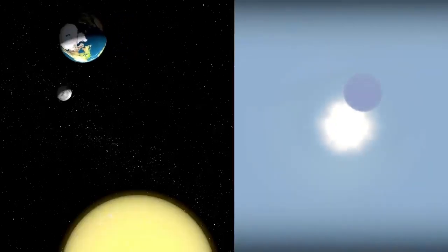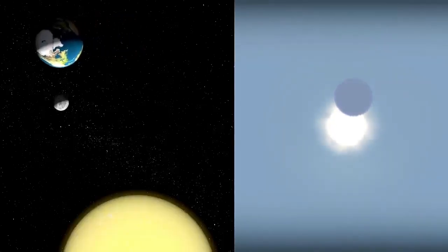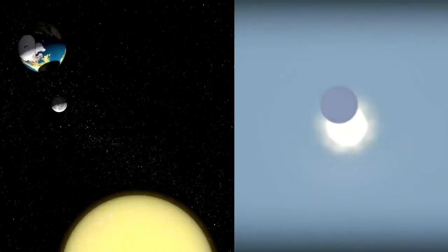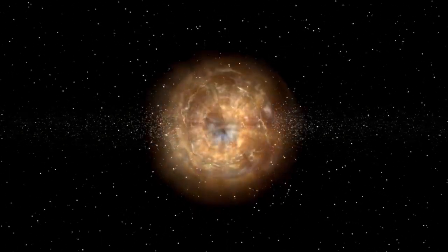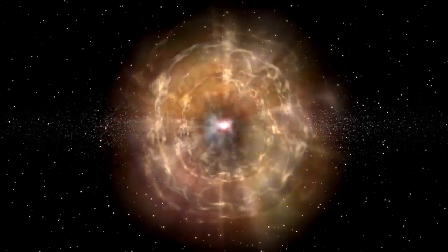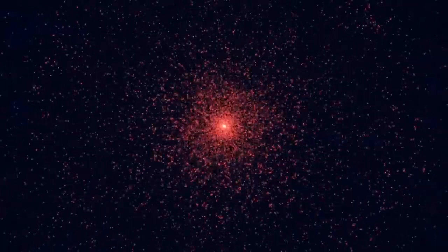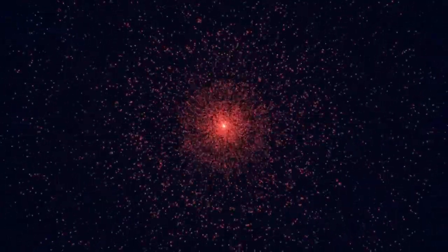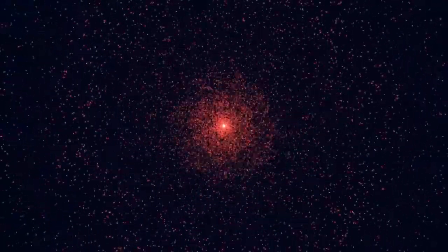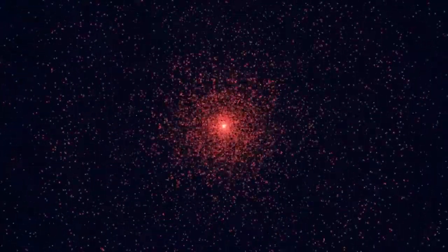Betelgeuse is also known for its fluctuating brightness. It's classified as a semi-regular variable star, meaning its brightness changes over a cycle of about 400 days, with longer fluctuations happening over a five-year period. While this behavior has been observed for centuries, the star has sometimes shown unexpected changes that don't fit known patterns.